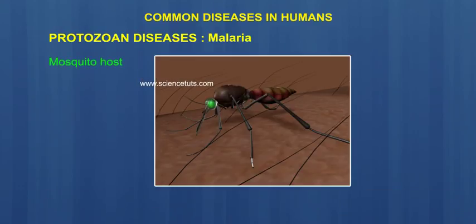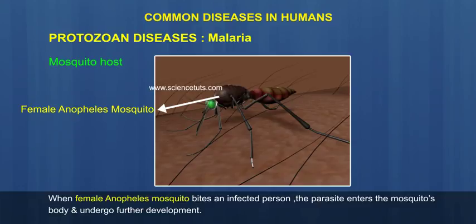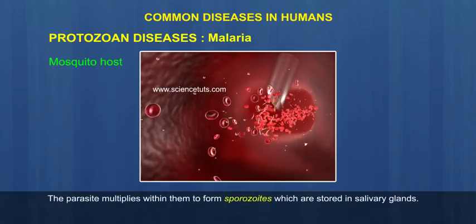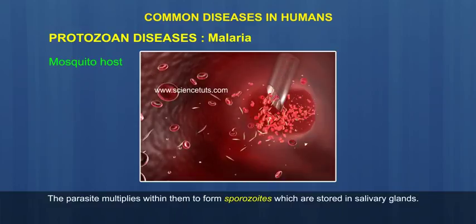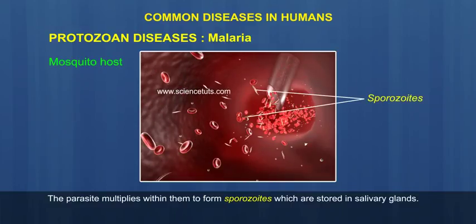Mosquito host: When a female Anopheles mosquito bites an infected person, the parasite enters the mosquito's body and undergoes further development. The parasite multiplies within them to form sporozoites, which are stored in the salivary glands.